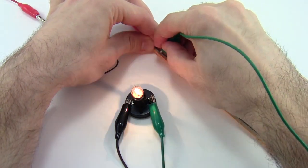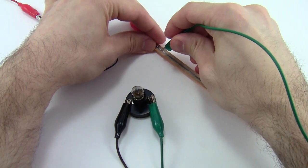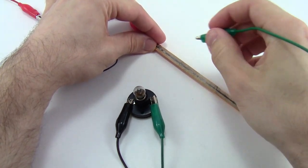For your experiment, you will measure how the exact position of the green alligator clip along the length of the pencil affects the brightness of the bulb.